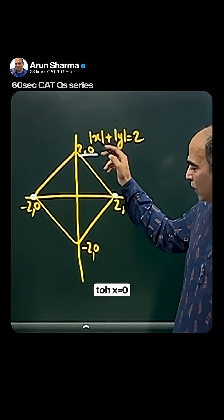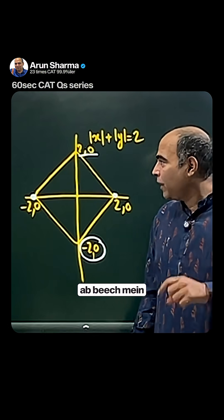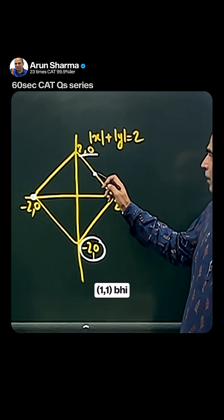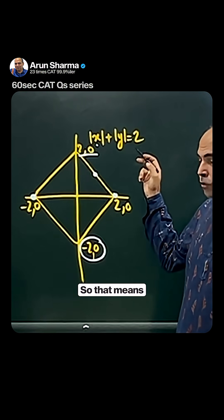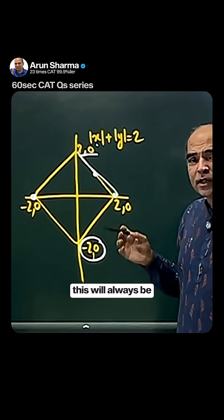In the graph, you can see that when x is 1 and y is 1, it equals 2. So that means this is a straight line in the front, and all the sides will always be straight lines. This is a square.